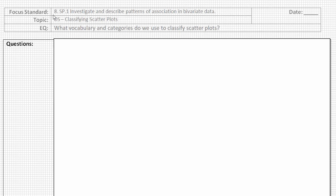Today's focus standard comes from Grade 8 Statistics and Probability, Standard 1: Investigate and Describe Patterns of Association in Bivariate Data. Our topic comes from our new unit, Data and Statistics, Classifying Scatter Plots. Our essential question today is, what vocabulary and categories do we use to classify scatter plots?